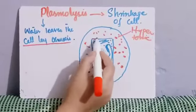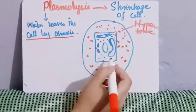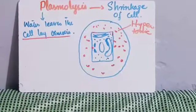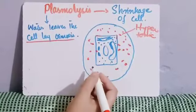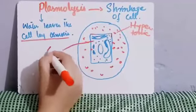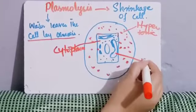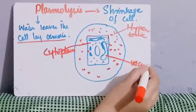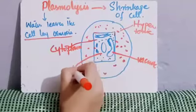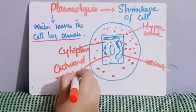If we keep this plant cell into the hypertonic solution, the plant cell will lose its water content. Water is first lost from the cytoplasm, then from the vacuole. And this is known as the outward movement of water.